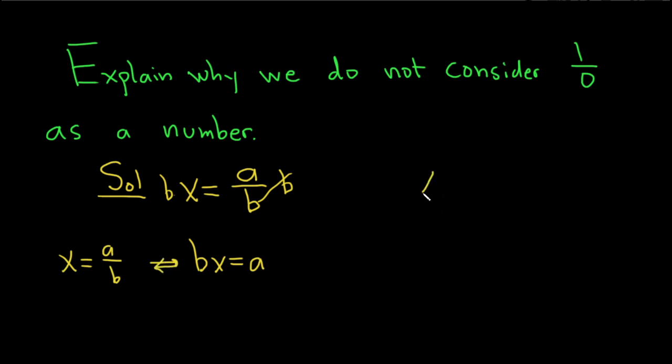Same thing here. If we try to define 1 over 0 in that way, we end up with 0x equals 1.